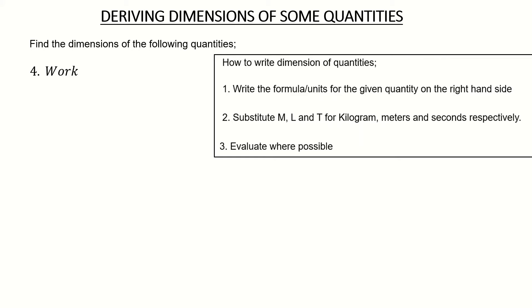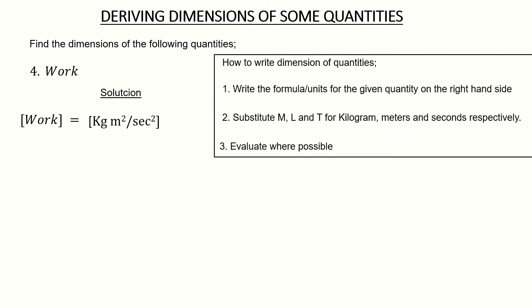Let's find the dimension for work. First I find the units for work: it is kilogram meter squared per second squared. When you know the unit for the quantity, it makes the work easy. So kilogram becomes capital M, meter squared becomes L squared, and seconds squared becomes T squared.